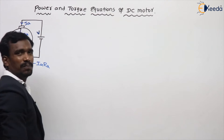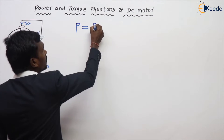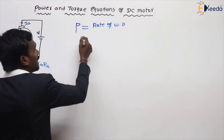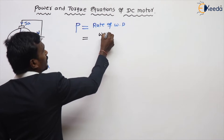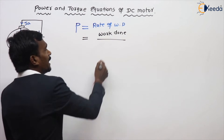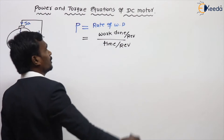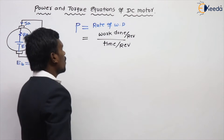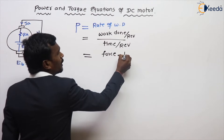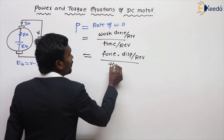From the basics of physics, power output equals rate of work done. Rate of work done equals work done divided by time, which is work done for one revolution divided by time for one revolution. Work done equals force into displacement for one revolution upon time for one revolution.